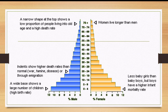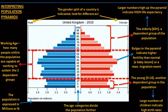Always remember the shape when interpreting. This next diagram has a deeper interpretation — it shows the United Kingdom in 2010. On the left side of the diagram you see the population numbers, which can be in millions or percentages on the x-axis. The age groups are always on the y-axis, on the vertical section.